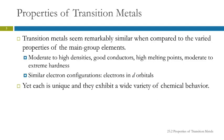We need to talk about the properties of transition metals because it's the transition metals that are going to do most of this fun stuff. The transition metals seem remarkably similar to each other when we compare them to the main group elements, which vary a lot. The transition metals tend to have moderate to high densities, they're good conductors of electricity, have high melting points, and they're moderate to extreme in their hardness.